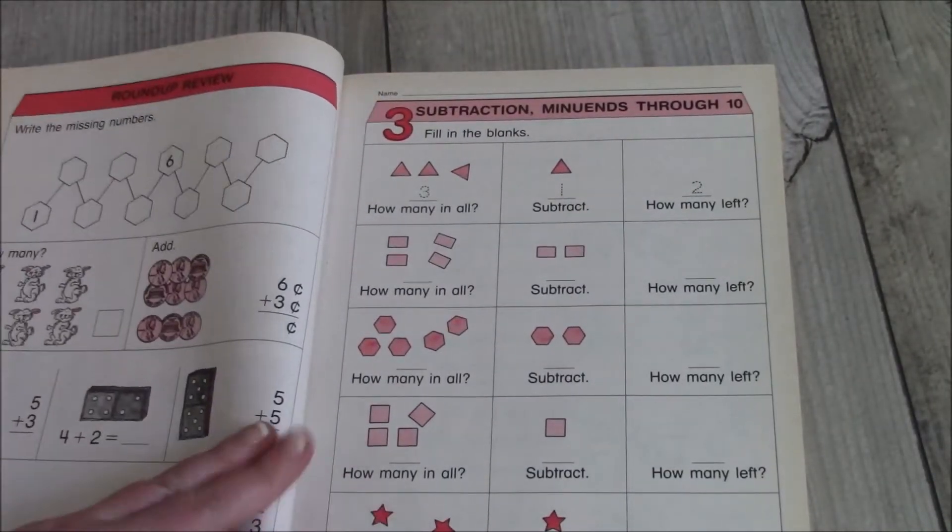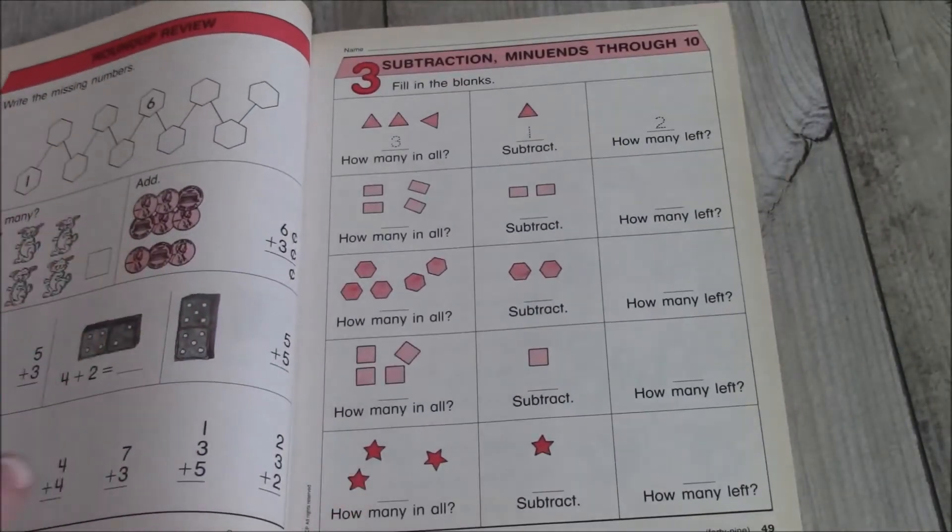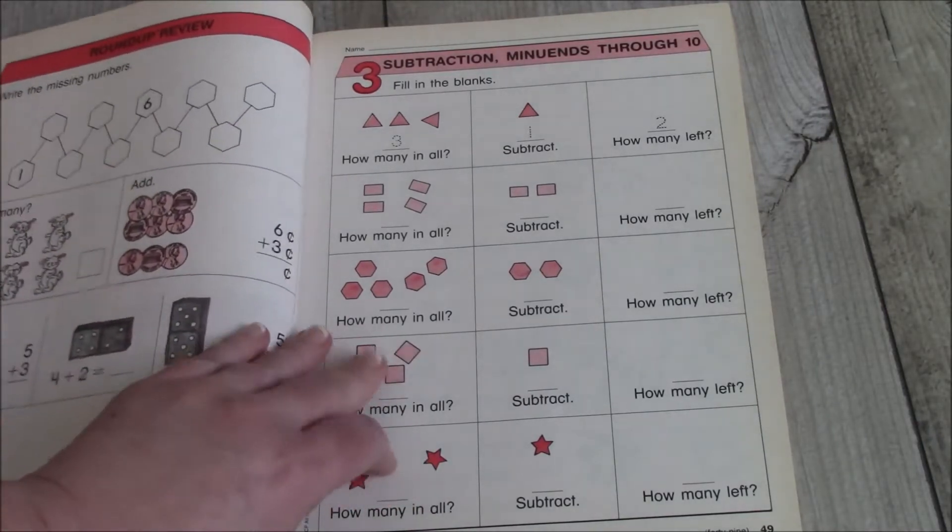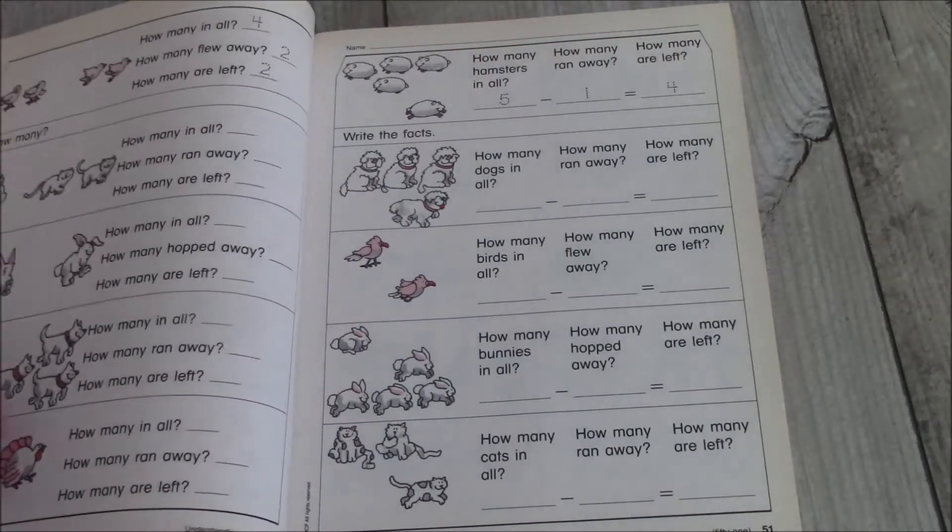So whatever that looks like for you and your family. And then after a checkup review, we kind of move on. Now, there is the spiral method and there's the mastery method. And this one definitely has more of a mastery in it.